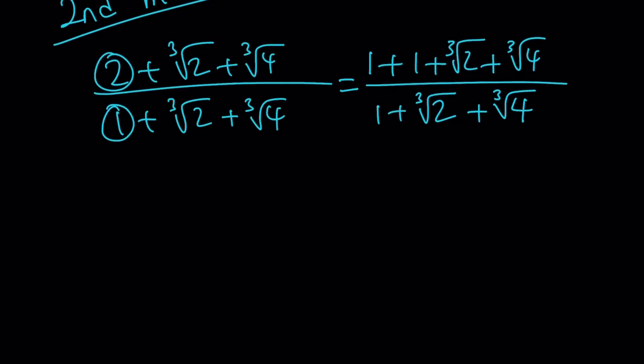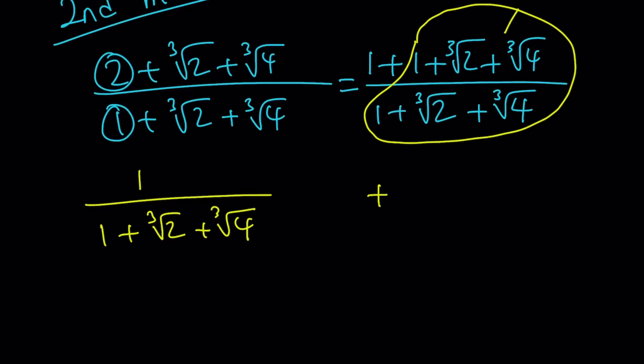So why not split it up into 1 plus 1 plus cube root of 2 plus cube root of 4 divided by 1 plus cube root of 2 plus cube root of 4. How does this help? Split up fractions. I think we've done this recently. If you have a fraction with an x thingy, we can split it up into the sum of two fractions.